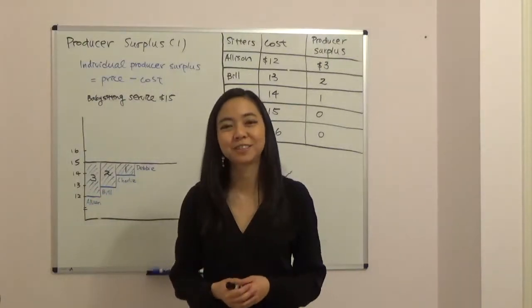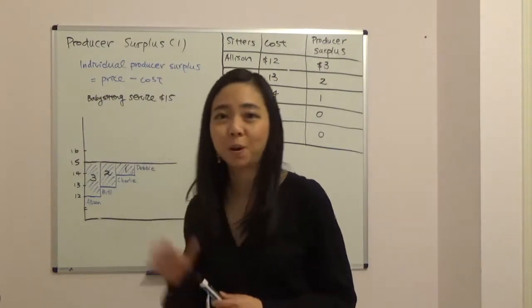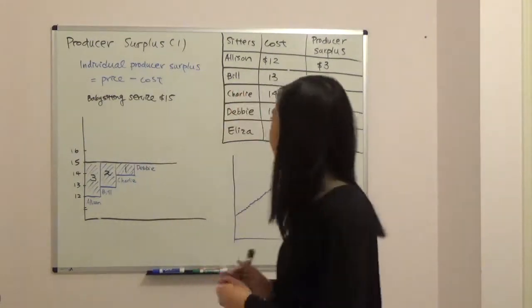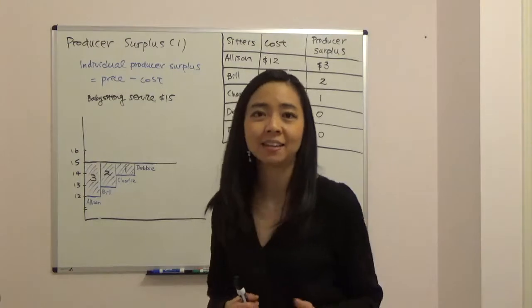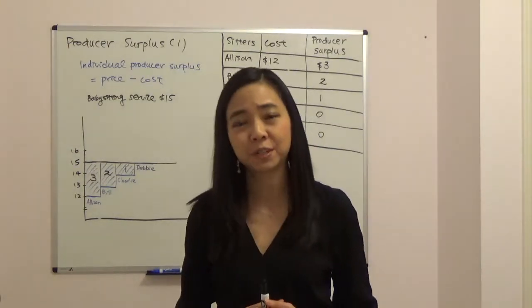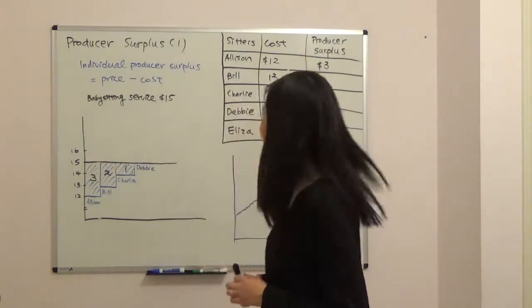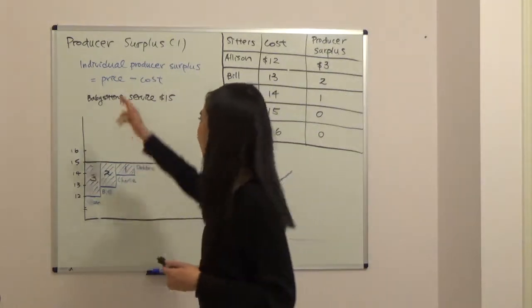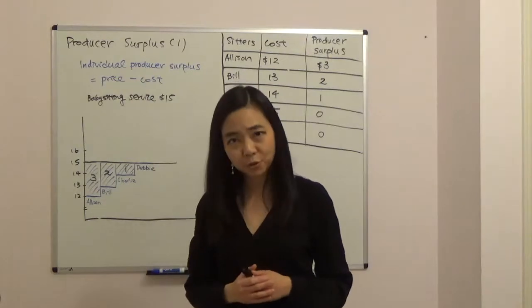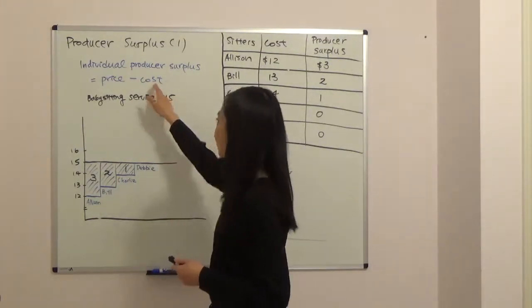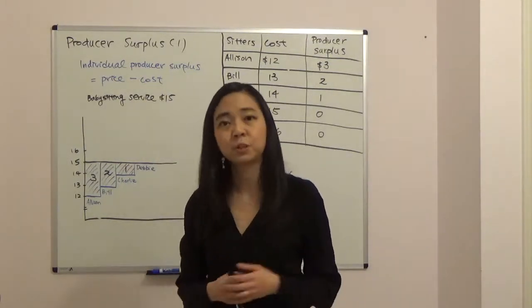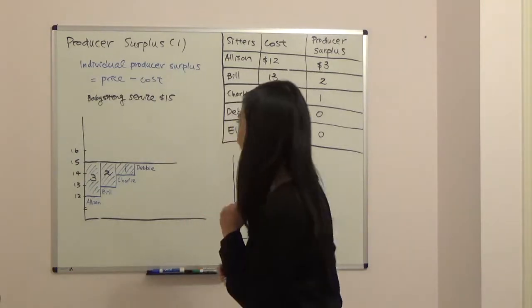Hello everyone, my name is Iris Franz and today we're going to talk about producer surplus. Producer surplus is the way that economists measure the welfare of producers from participating in the market. By definition, individual producer surplus equals price minus cost. The cost is the cost the producer incurs in producing that good or service.